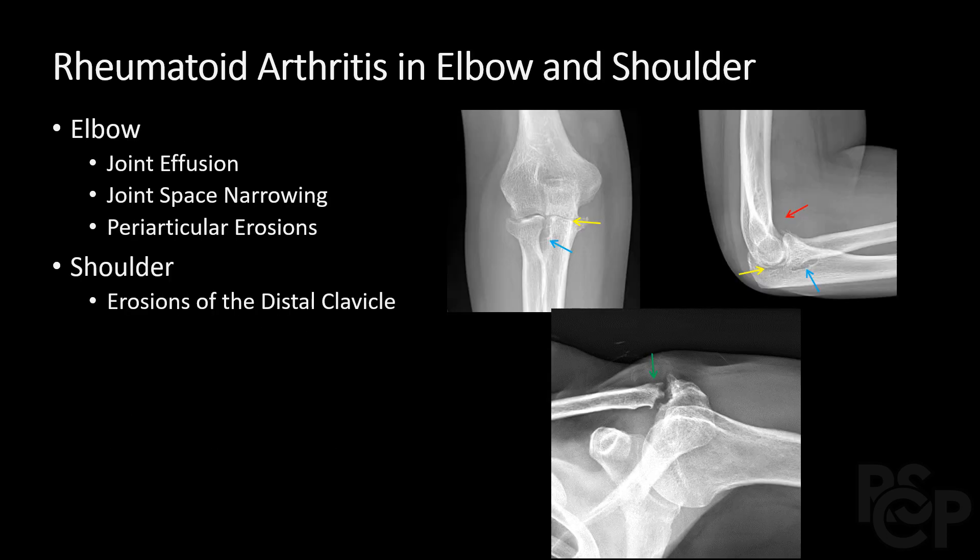Now I'm going to discuss rheumatoid arthritis in the elbow and shoulder. The red arrow represents abnormal soft tissue attenuation anterior to the distal humerus, consistent with a joint effusion. The yellow arrows show joint space narrowing, most pronounced involving the ulno-humeral articulation. The blue arrows show periarticular erosions, most pronounced involving the proximal radio-ulnar articulation. Finally, the green arrow shows erosions of the distal clavicle.